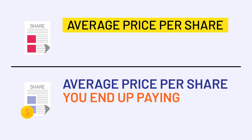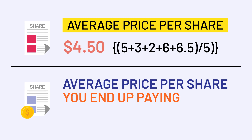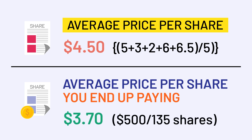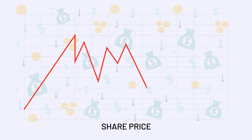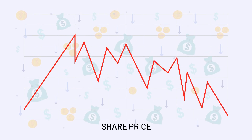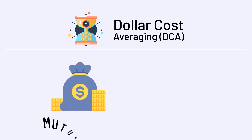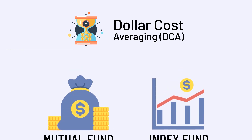It's important to highlight the average price per share compared to the average price you end up paying. In this case, the average share price over five months was $4.50 — that is, ($5 + $3 + $2 + $6 + $6.50) ÷ 5 — however the average price you paid per share was significantly lower at $3.70 ($500 ÷ 135 shares). Of course, this strategy will not always result in a profit, nor will it protect investors from falling share prices.